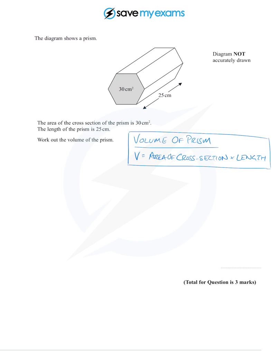Well, we're given the area of the cross section, which is 30, we're given the length which is 25, and we're asked to work out the volume. And all you need to do is remember the formula for the volume of a prism.